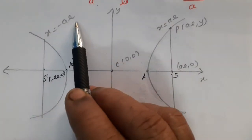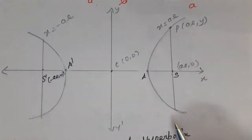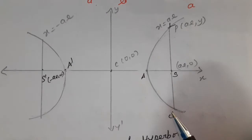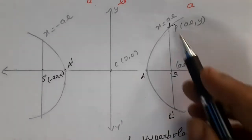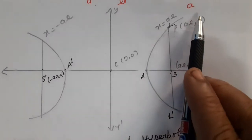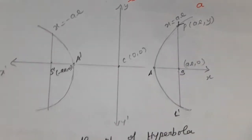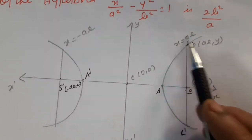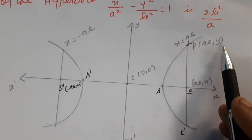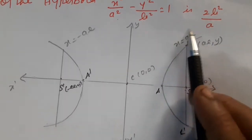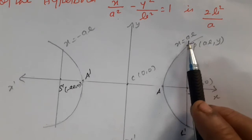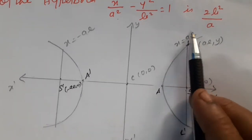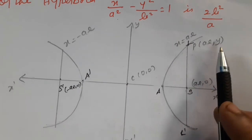We are going to prove the length of the latus rectum, that is LL dash, is equal to 2b²/a. We take any point P on the latus rectum: P = (ae, y), because the equation of the latus rectum is x = ±ae. So one of the points P has x = ae, and y is taken as y itself.